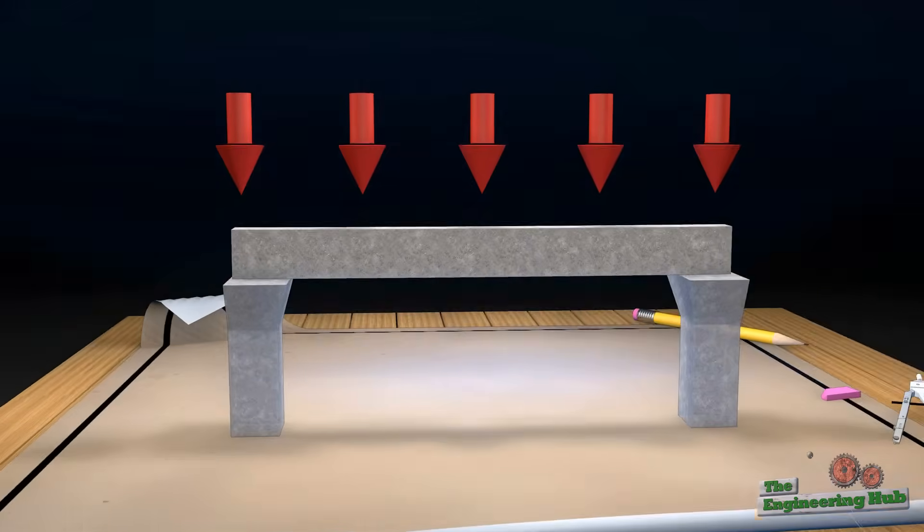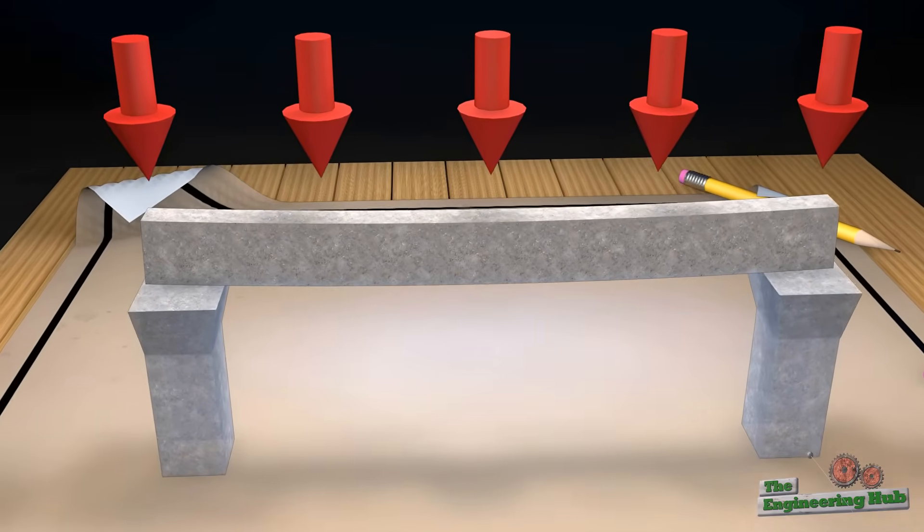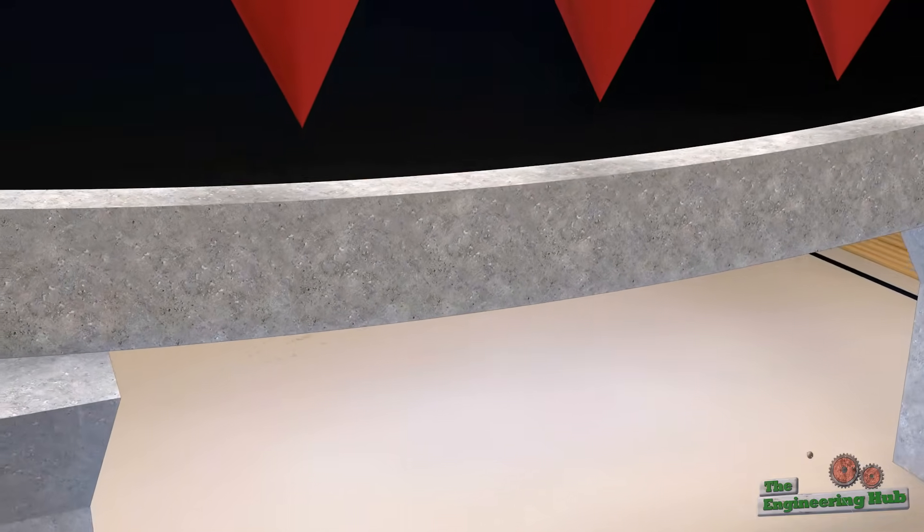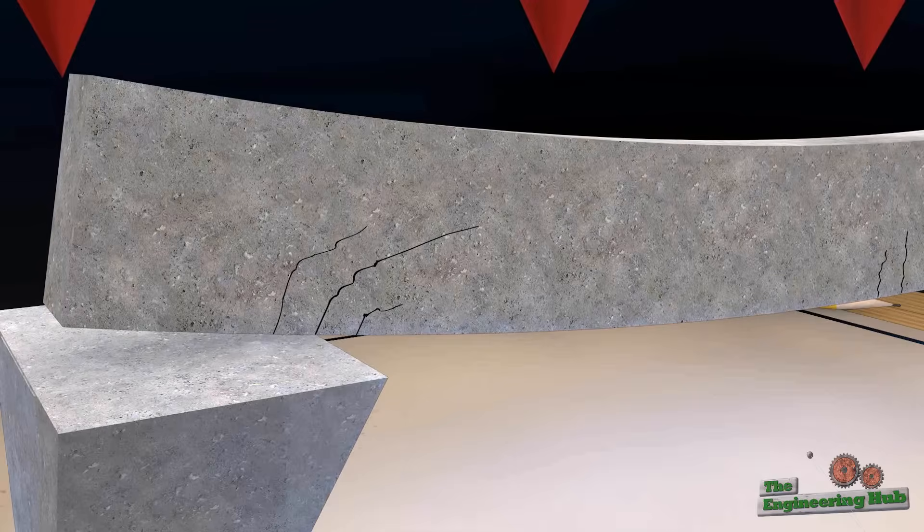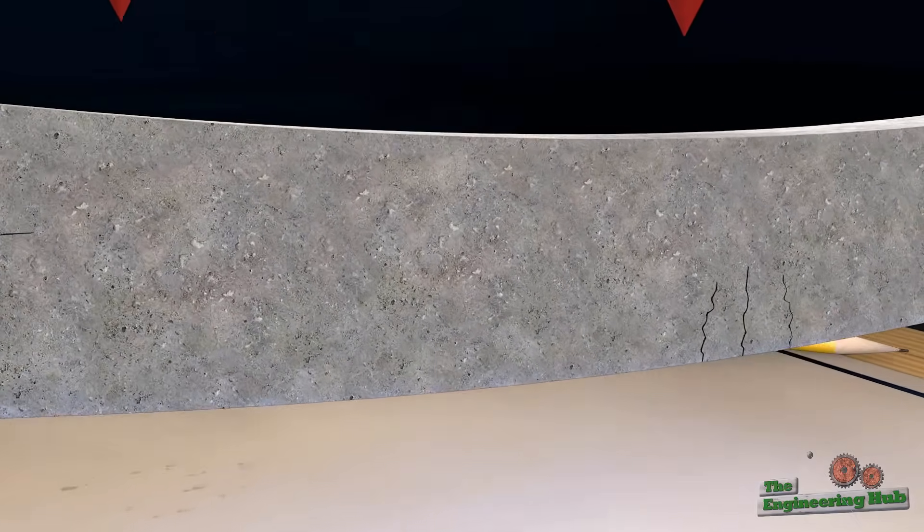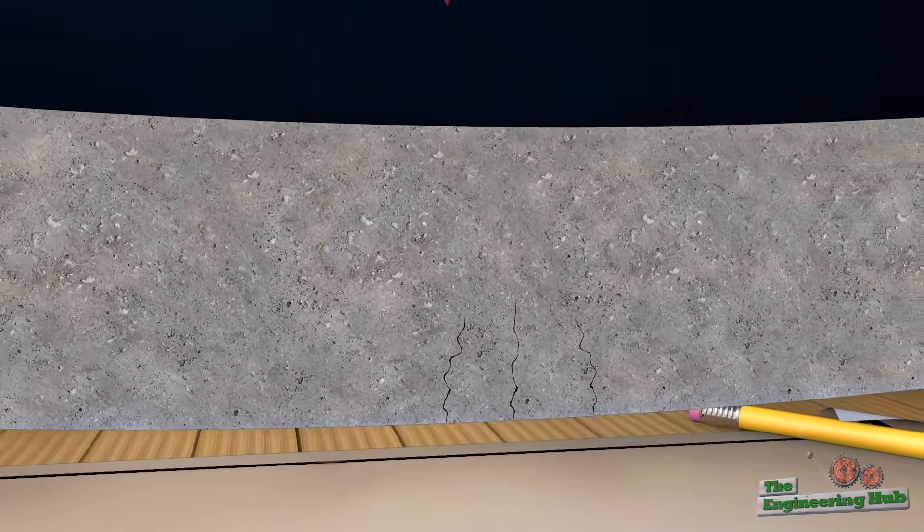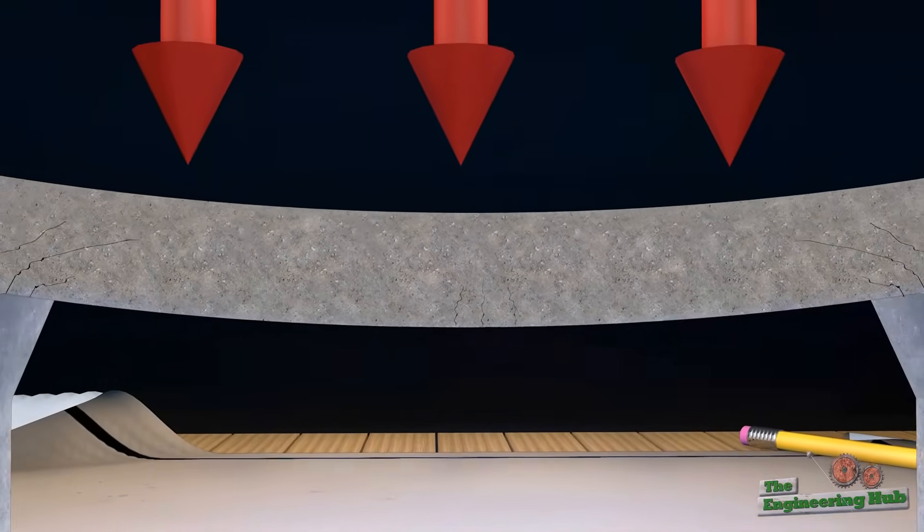As the beam continues to be bent, cracks start to appear at the bottom side, which is being stretched. Once a crack develops, the concrete loses its ability to carry tension loads and therefore the tension has to be taken by the steel reinforcement.